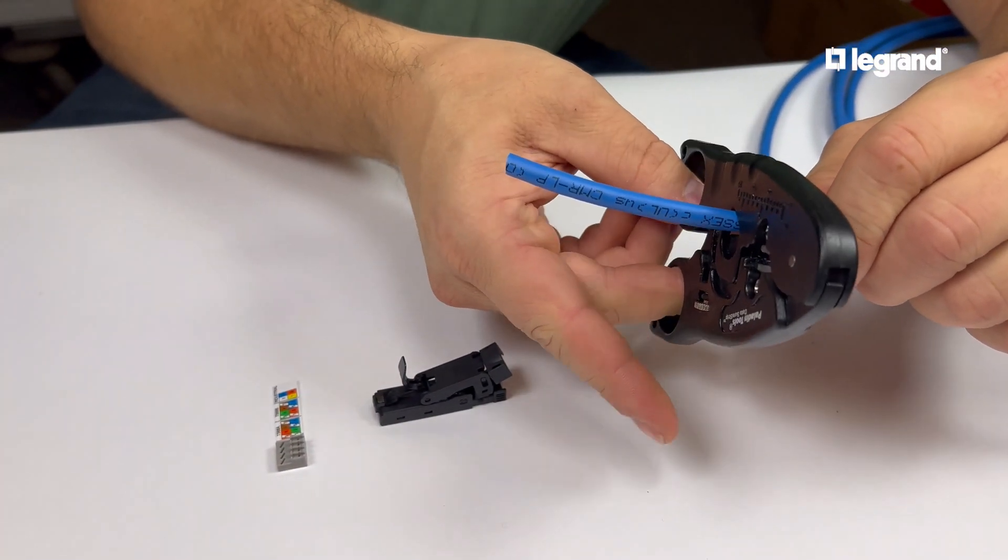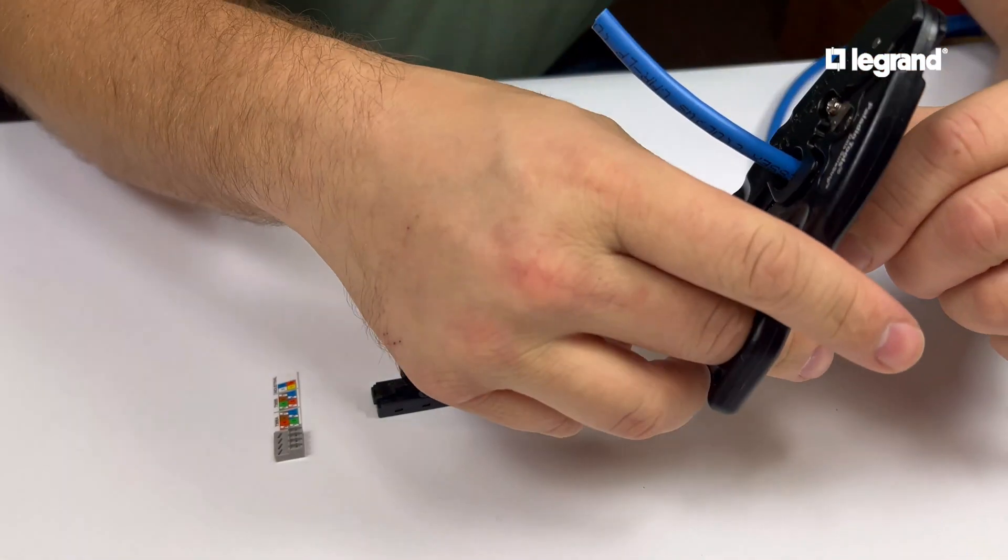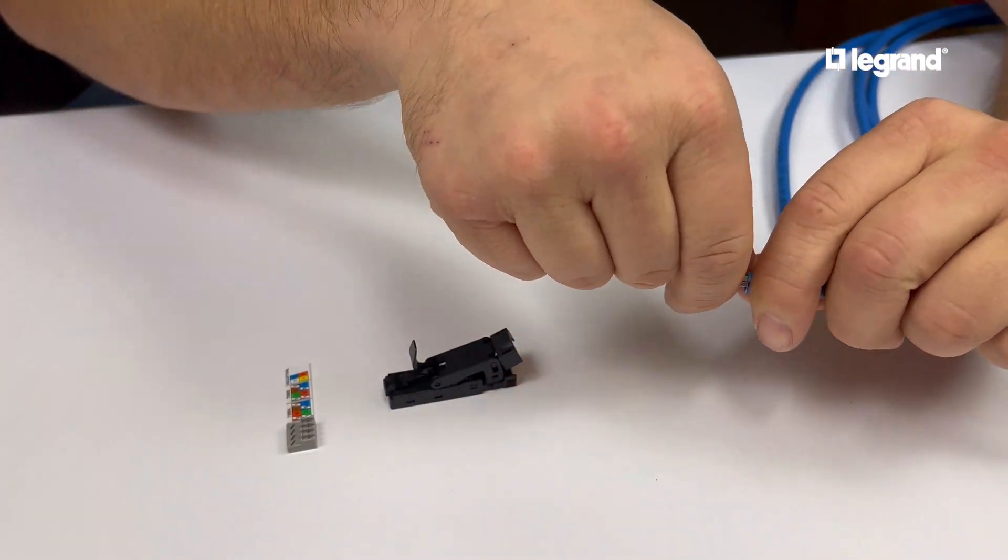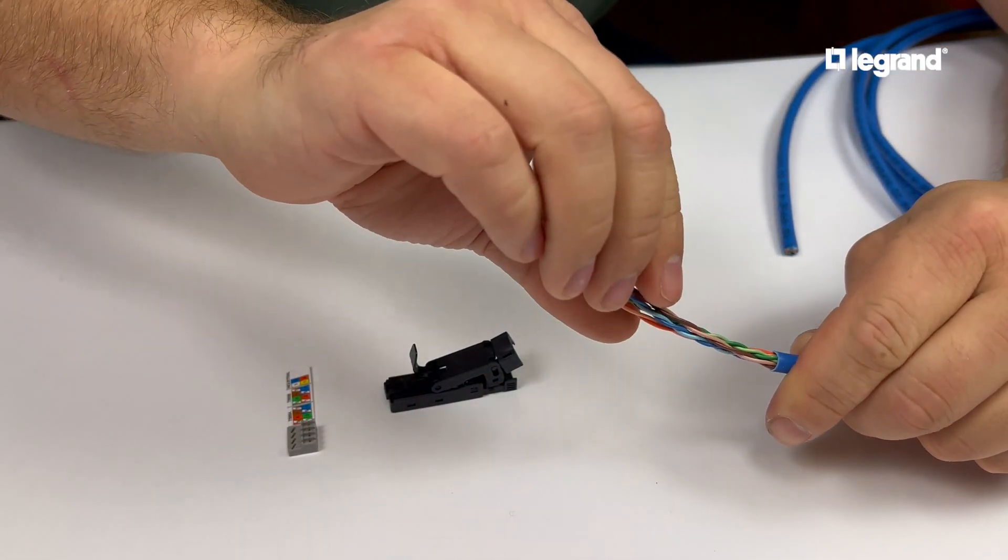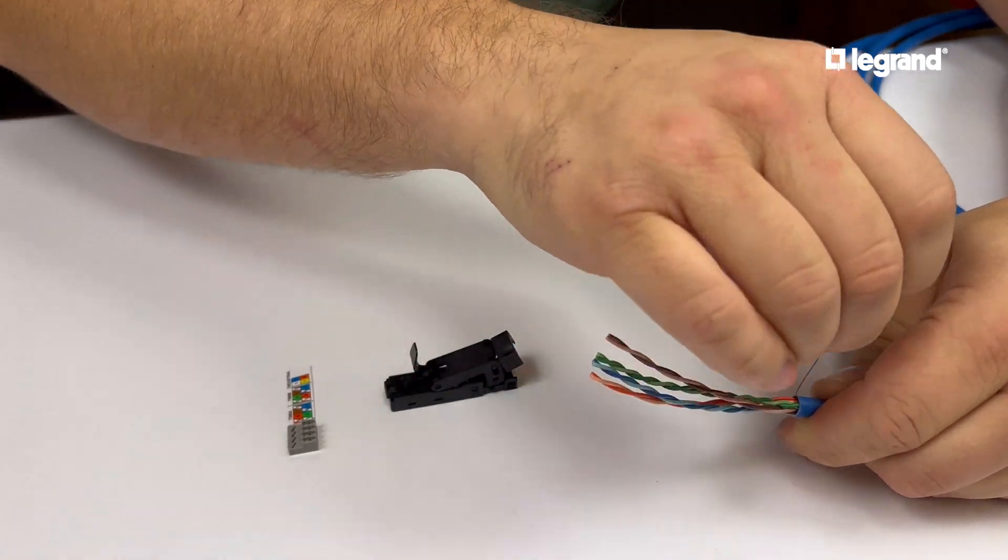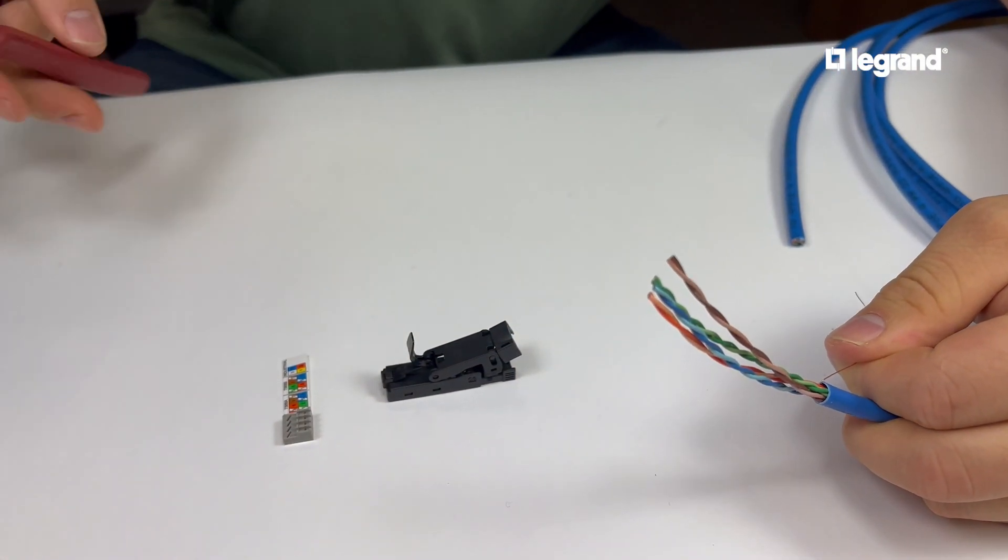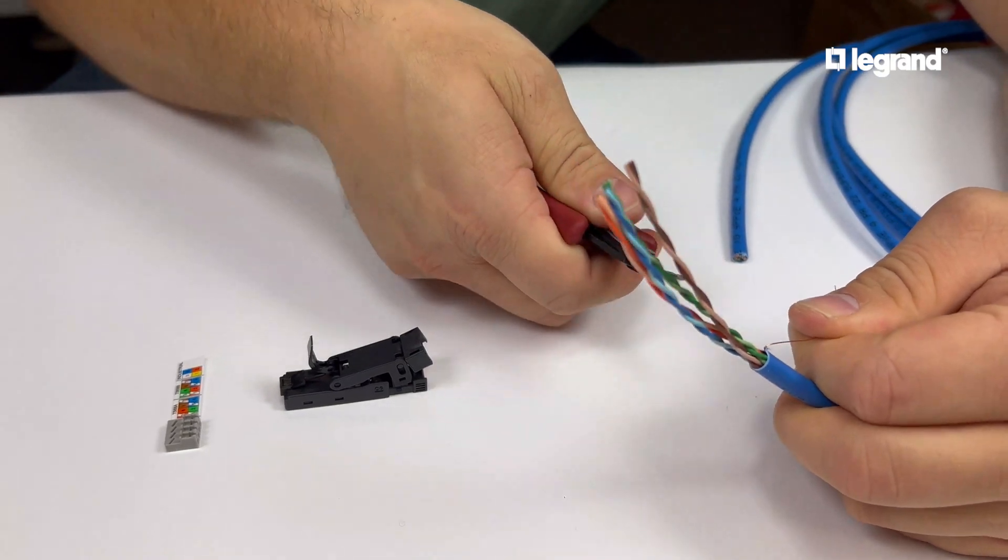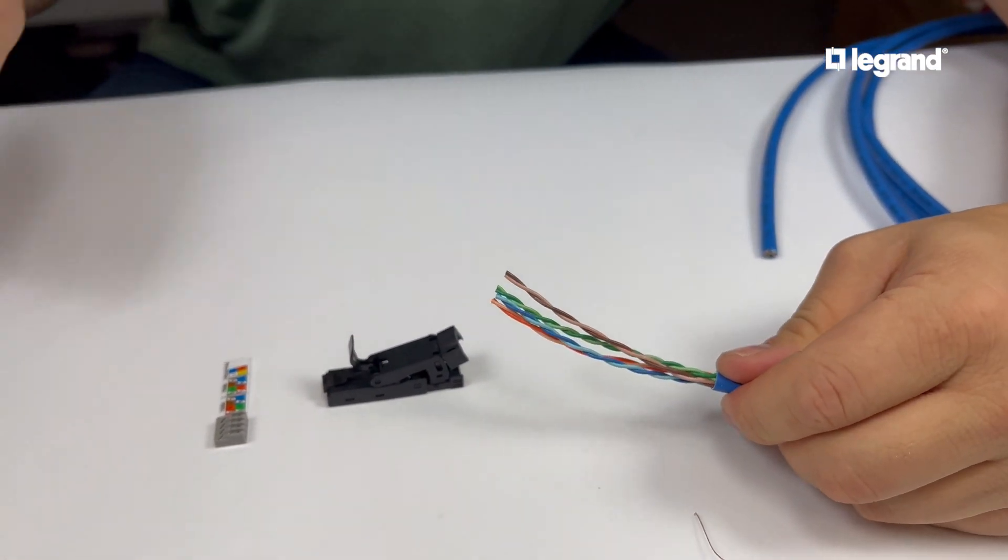You're ready to start the termination. Using your strippers, strip about an inch or two of your cable's jacket, then spread your pairs back. This will expose any spline that's in the cable. Trim any splines so that it's flush with the cable's jacket.